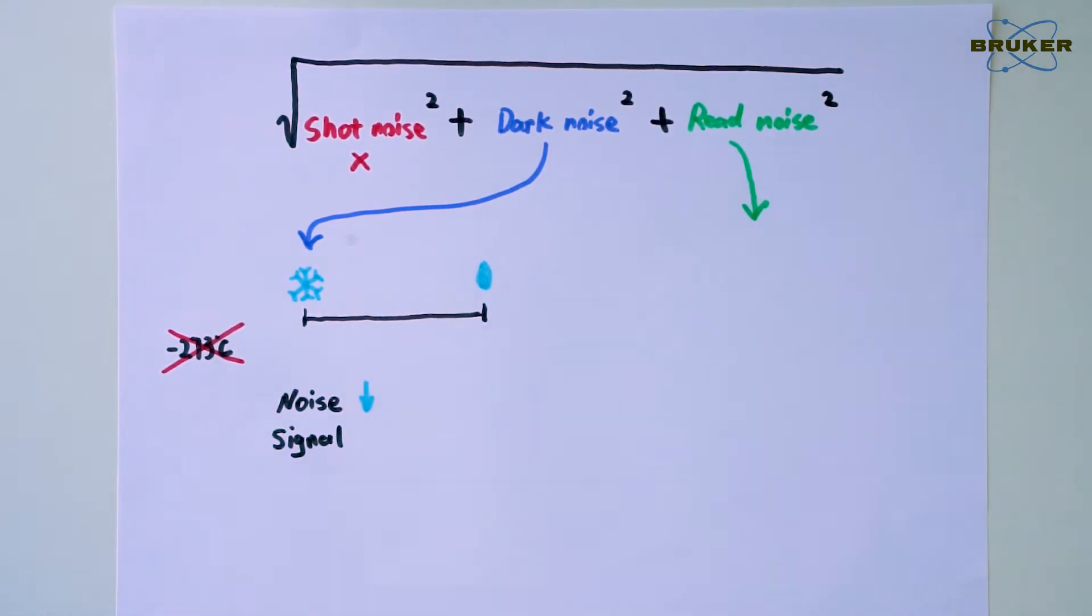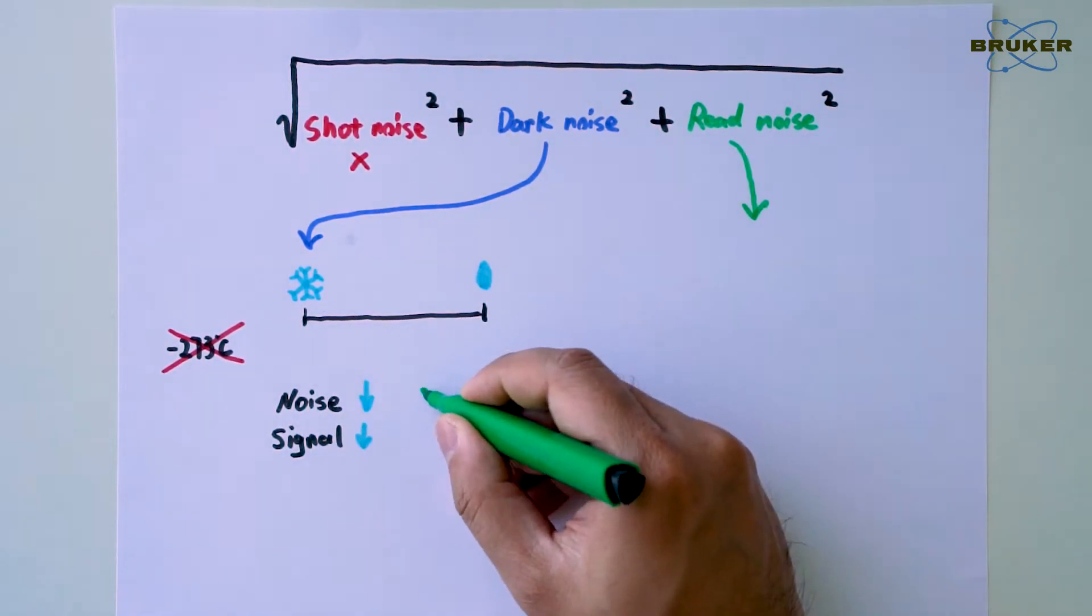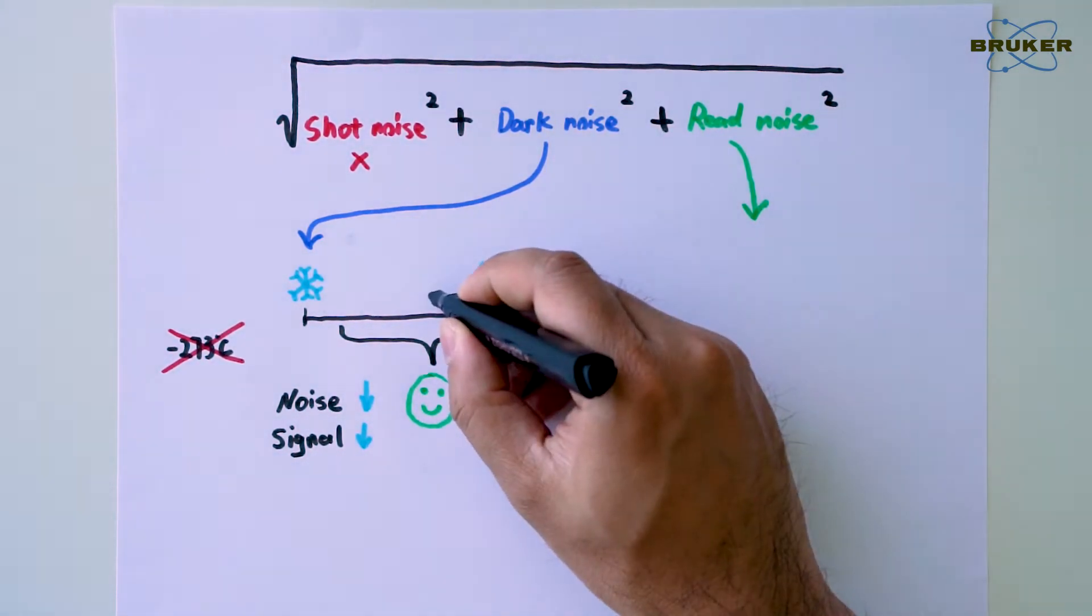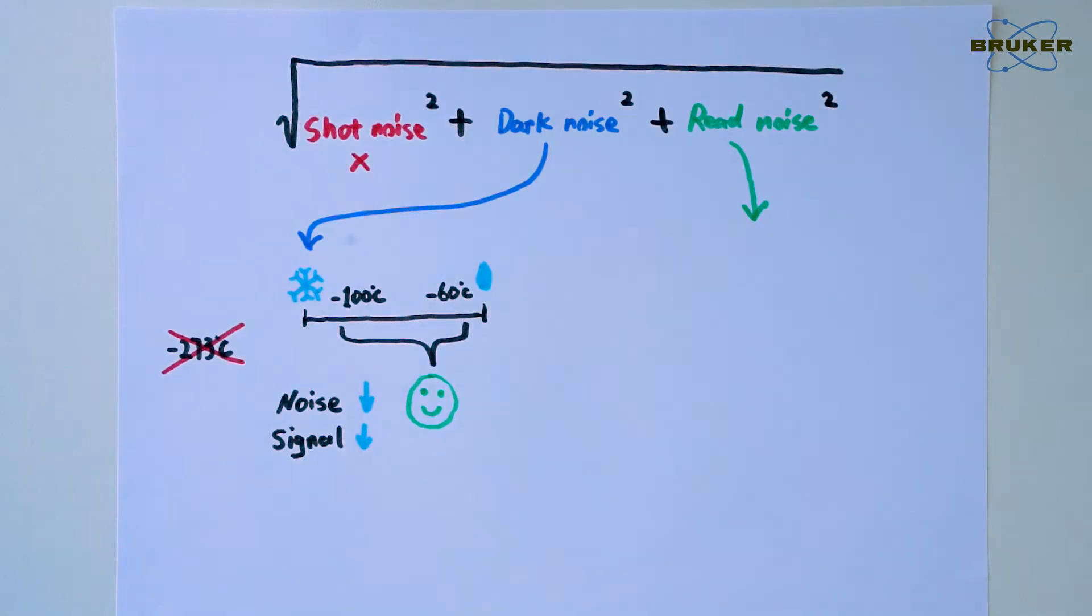Simply put, we lose sensitivity when the CCD gets too cold. In fact, there is a sweet spot for CCD temperature that achieves the optimal signal-to-noise ratio, ranging from minus 60 degrees to about minus 100 degrees.